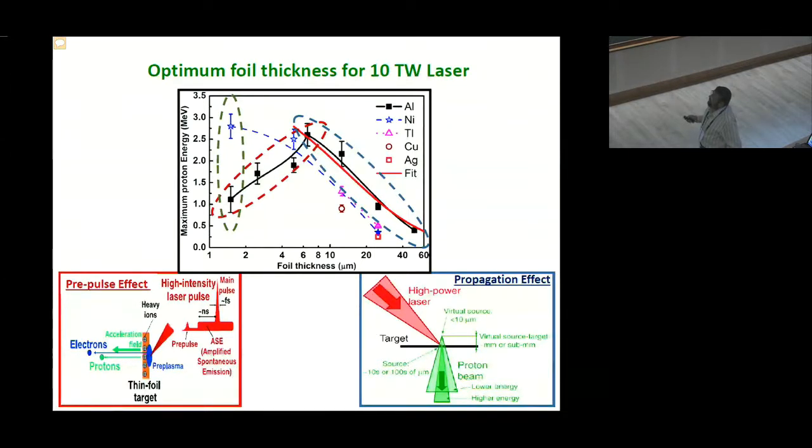Whereas, in case of aluminum, if you go for thinner target then the proton energy decreases. Whereas, in case of nickel if you go to up to 1 or 2 micron then proton energy got up to 3 MeV which is more than in case of aluminum.